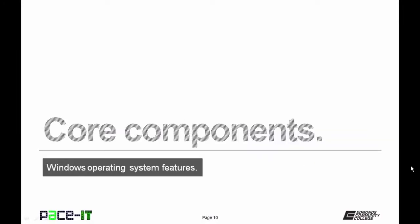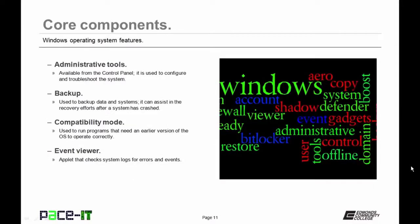Let's move on to some core components of Windows operating systems, beginning with administrative tools. All versions come with administrative tools, located in the control panel, which allow you to configure and troubleshoot your system. All Windows operating systems also have a backup program built right into the operating system.